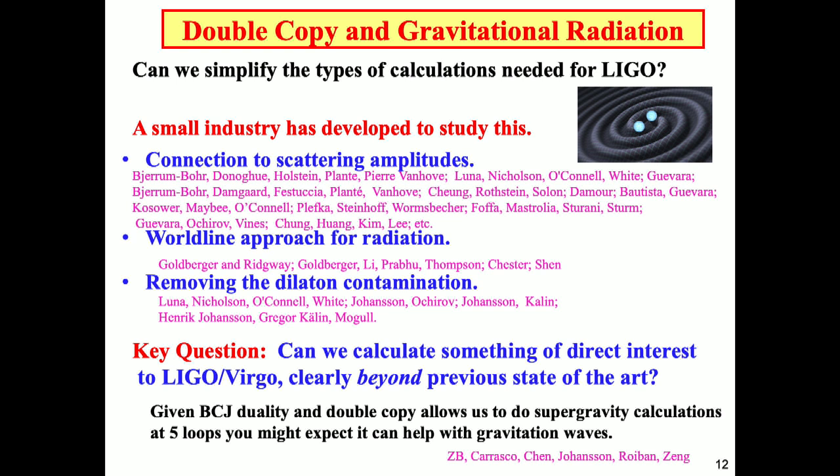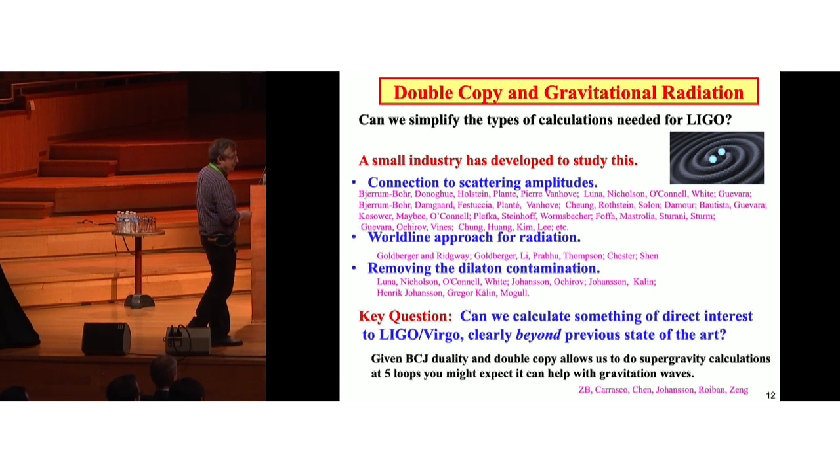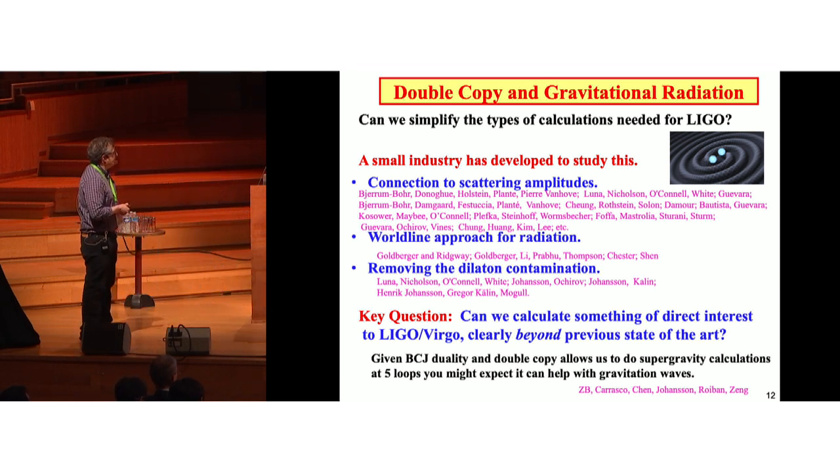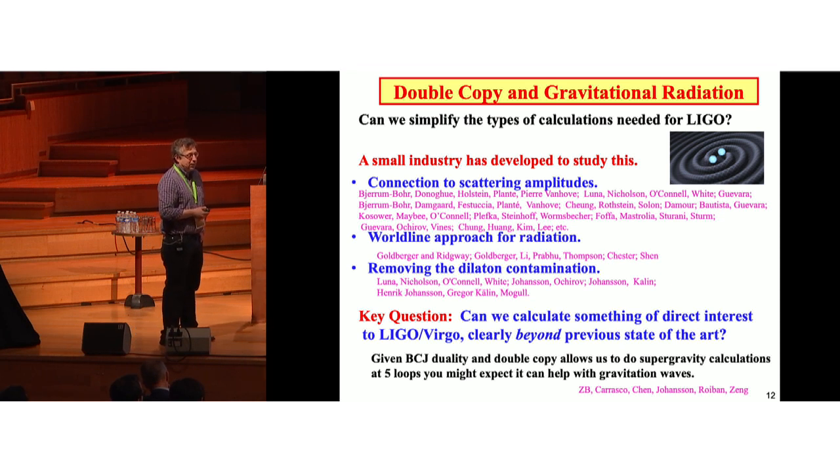And in fact, there's a small industry of people who are thinking about applying double-copy and ideas in scattering amplitudes to gravitational radiation. First, you have to understand the connection between the scattering amplitudes and things like the two-body Hamiltonian or other physical observables. There's a worldline approach for radiation that was pioneered by Goldberger and Ridgway. There are some technical issues having to do with removing the dilaton. When you do the double-copy, like in string theory, there tends to be a dilaton. We don't want that. But of course, the key question for us is, can we calculate something of direct interest to LIGO-Virgo, which is clearly beyond the previous state-of-the-art? Now, maybe just a little comment is that we have experience of doing very high loop orders. We did supergravity calculations, a recent one for the past year, at five loops in N equals 8 supergravity. It turns out that this 3PM problem, the one that needed to be done, that's a two-loop problem. So that looked pretty good.